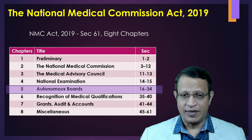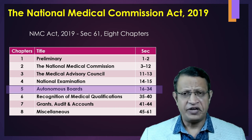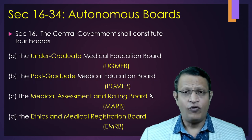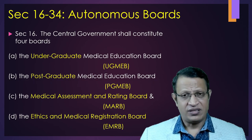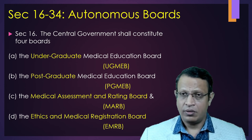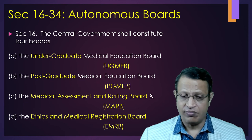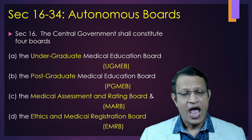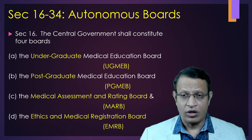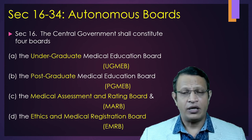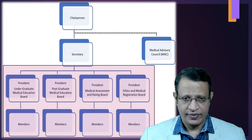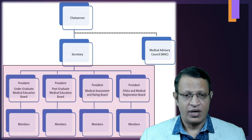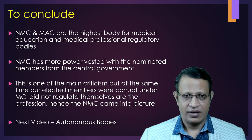The NMC Act 2019, with 61 sections and 8 chapters, also has four autonomous boards governed under sections 16 to 34. These four autonomous boards are: the Undergraduate Board, the Postgraduate Board, the Medical Assessment and Rating Board (MARB), and the Ethics and Medical Registration Board (EMRB). These boards are autonomous and independent of each other but are governed by the National Medical Commission.